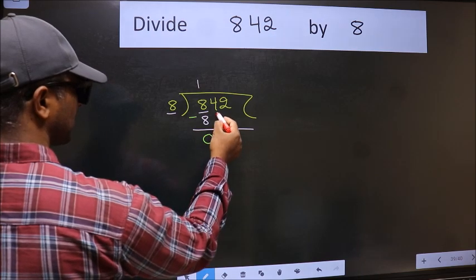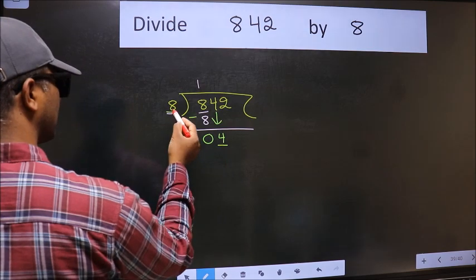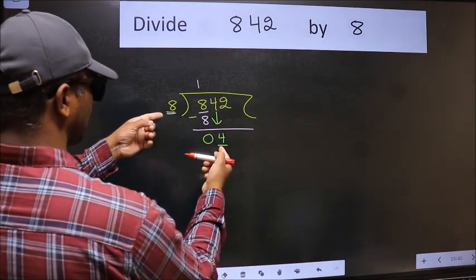After this bring down the beside number 4 down. Now here we have 4 and here 8. 4 is smaller than 8.